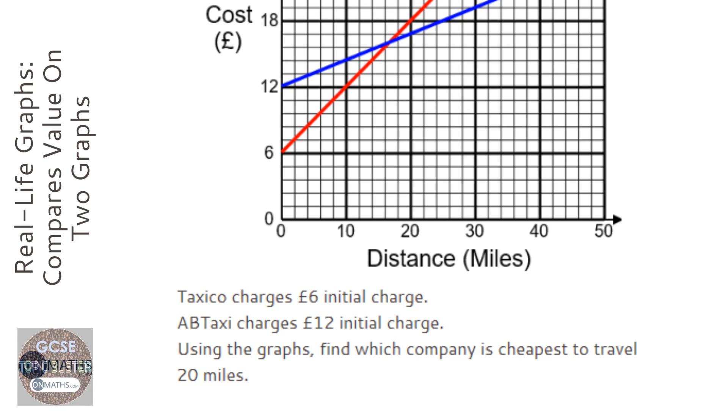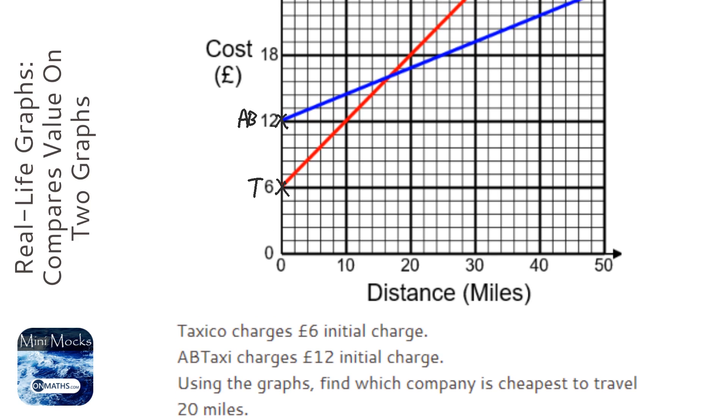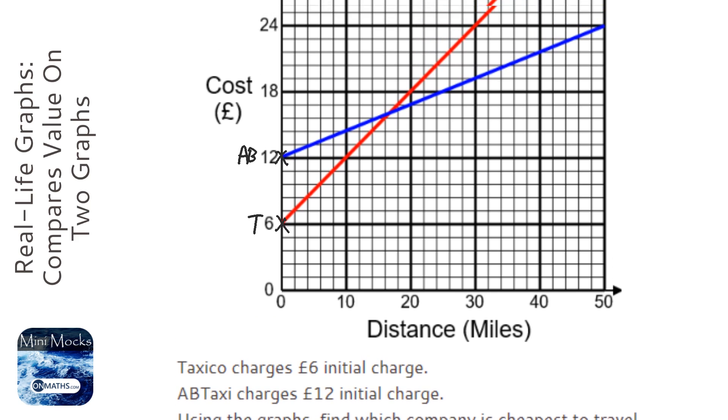Okay, so for this question we're not told which graph is which. We've got two companies, Texaco and AB Taxi, and we're trying to find which one's the cheapest to travel 20 miles. First of all, we need to work out whose graph is whose. It says that Texaco charges £6 initial charge, and since this one starts at 6, this is Texaco. And AB Taxi charges £12, that's AB there. Now, which is the cheapest to travel 20 miles?